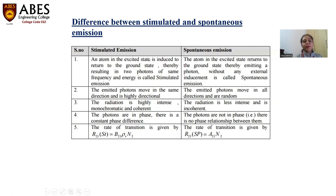In stimulated emission, the photons will be moving in a coherent manner — having the same constant phase difference — while in spontaneous, there will be no phase relation between the emitted photons. The last point is that the rate of emission in stimulated emission has a particular value, different from the rate of emission in the spontaneous case. This I am going to explain in the Einstein coefficients part.